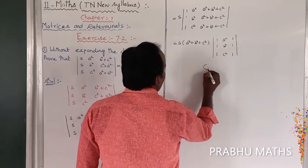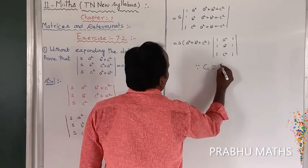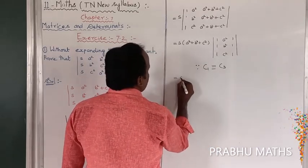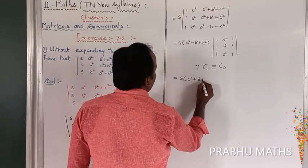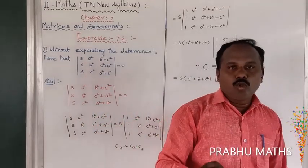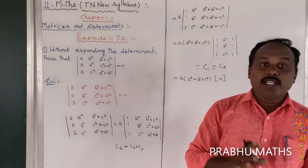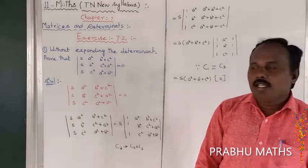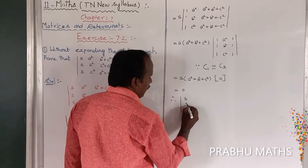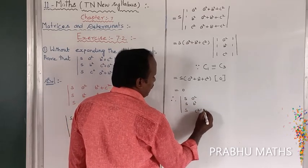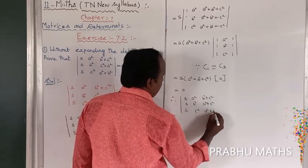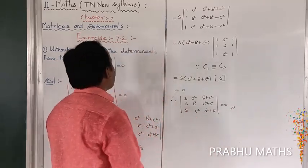Now, C1 is identically equal to C3 — both columns are (1,1,1). Since any two columns are identically equal, the determinant is 0. Therefore, S × (A²+B²+C²) × 0 = 0. Hence the determinant of the given matrix with rows (S, A², B²+C²), (S, B², C²+A²), (S, C², A²+B²) equals 0. Hence proved.